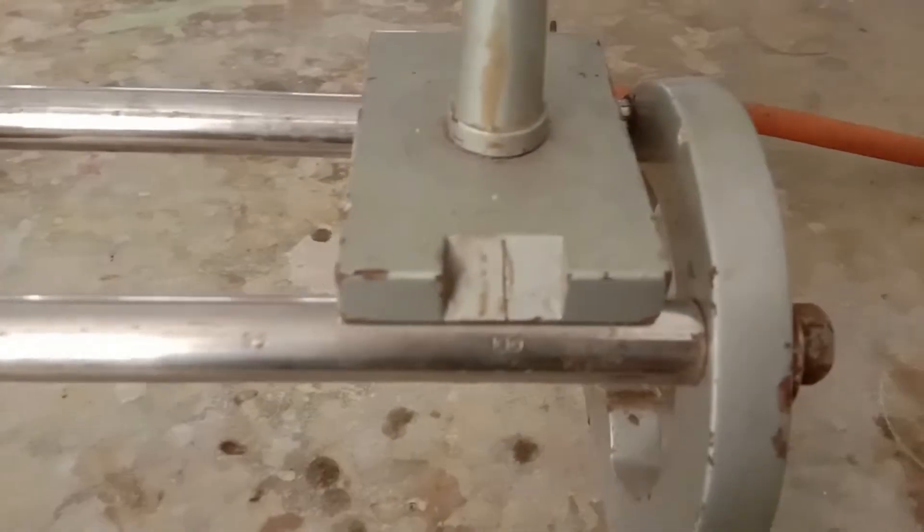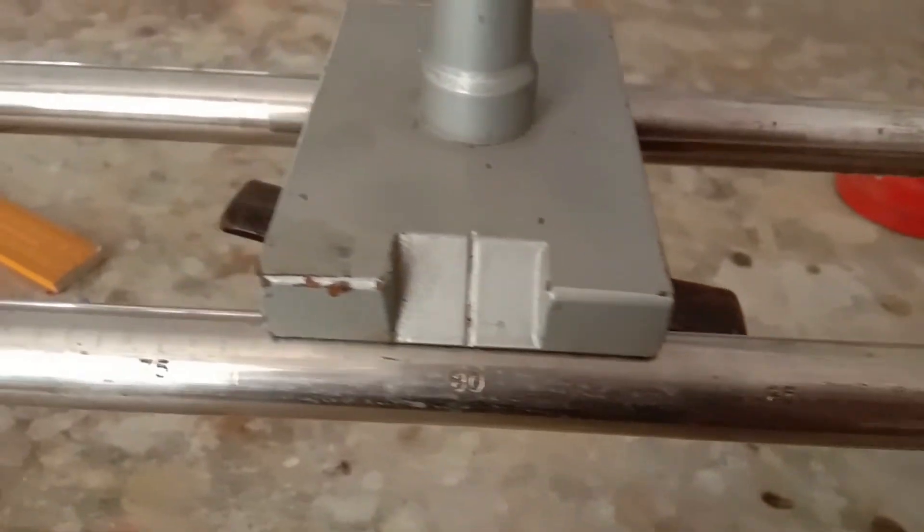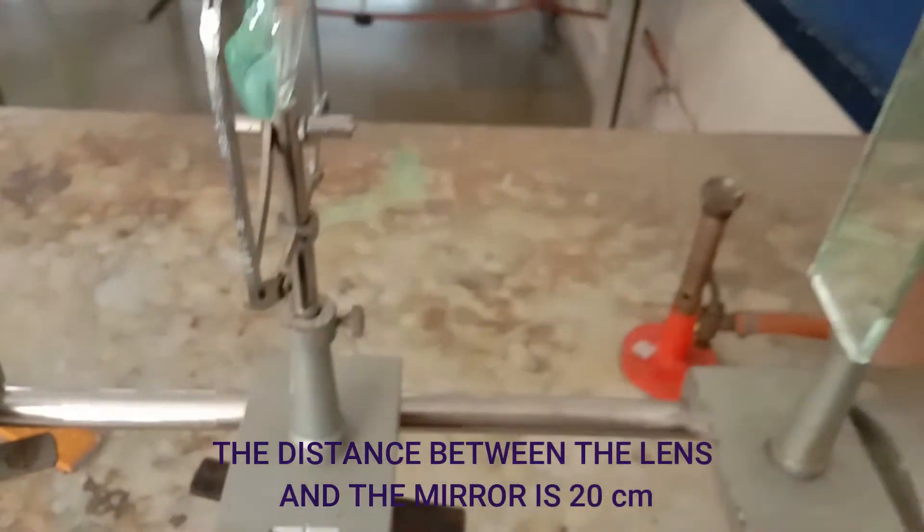Now repeat the above procedure for the distance between the lens and the plane mirror: 20 centimeters, 25 centimeter, 30 centimeter, and 35 centimeter.